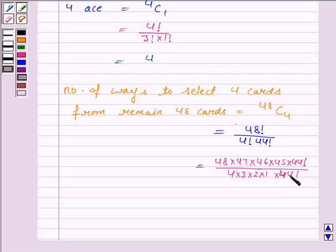Now, 44 factorial gets cancelled with 44 factorial. And 4 into 3 into 2 is 24. This is equal to 1,94,580.